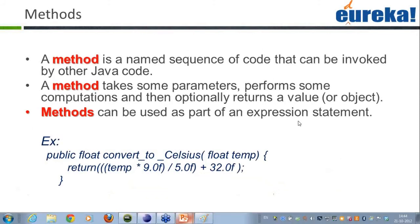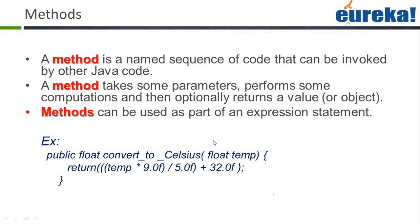Then we have the various methods. A method is a named sequence of code that can be invoked by other Java code, very much like a function. A method takes some parameters, performs some computations onto those parameters, and can optionally return a value. Here is an example of a return type: public float — this is the return type — and the method name is convertToCelsius. I am passing in a parameter, the temp variable, and returning a float variable.